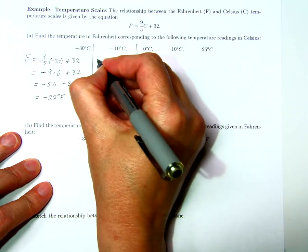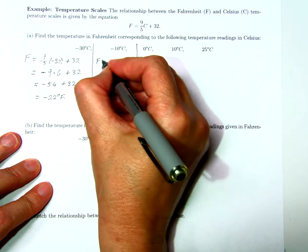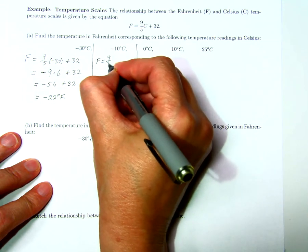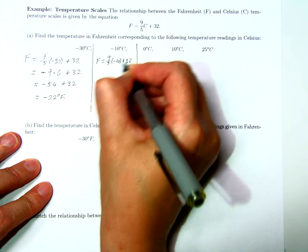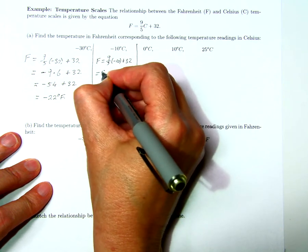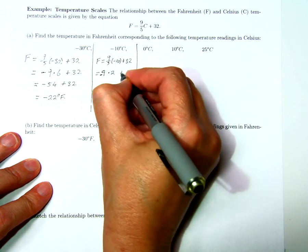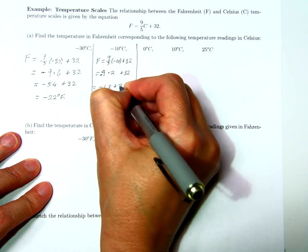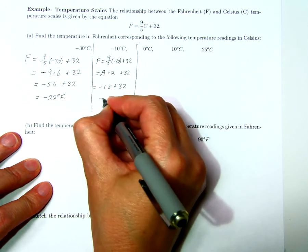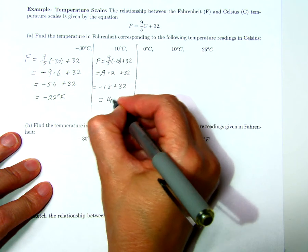When the temperature is negative 10 degrees Celsius, then in Fahrenheit it's 9 over 5 times negative 10 plus 32, which is minus 9 times 2 plus 32, which is minus 18 plus 32, and that's equal to 14 degrees Fahrenheit.